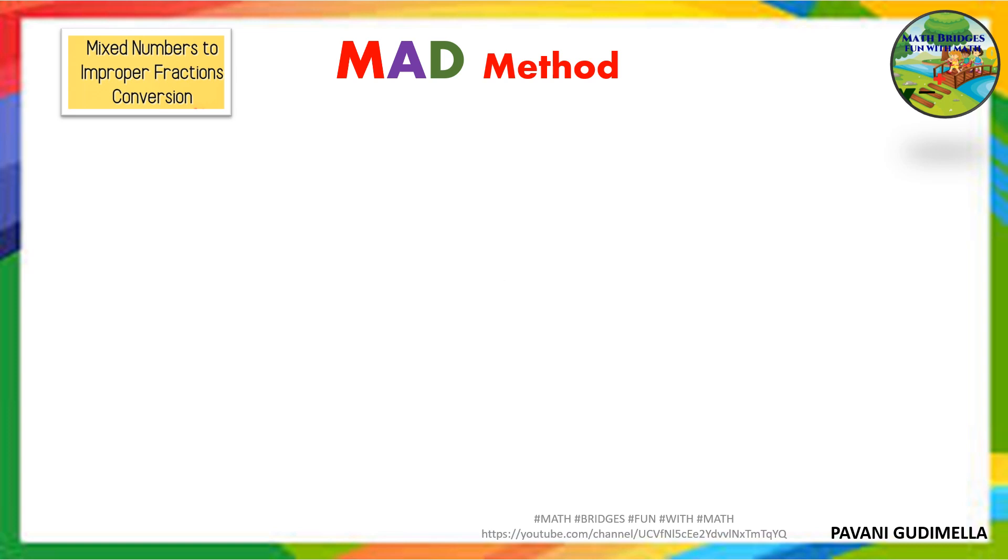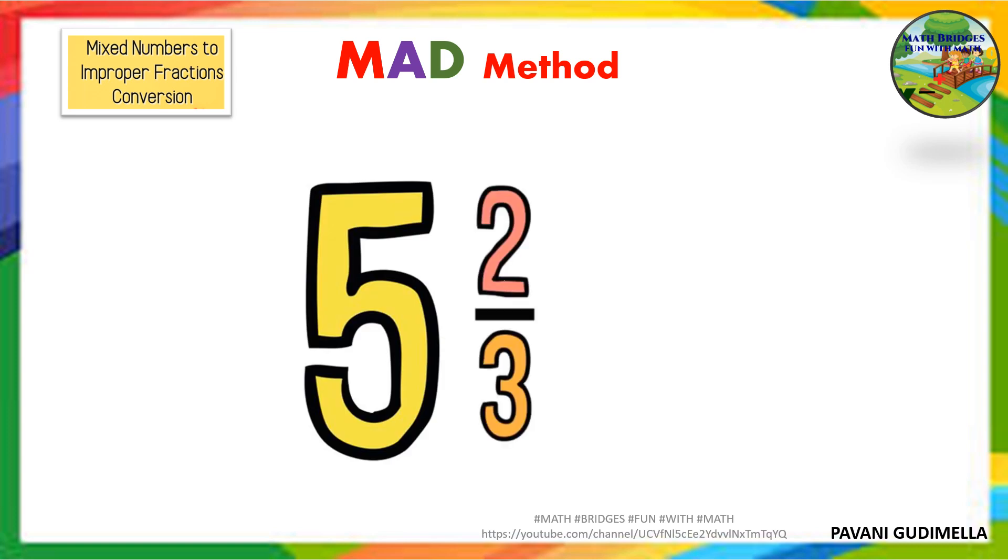Let's see one more example. 5 2/3 which is a mixed fraction. Here children, when you are doing you should not write multiply, add, denominator remains the same. All that in your mind at the back end it has to work. You have to multiply and add it at a very fast pace.